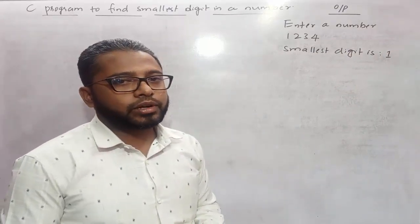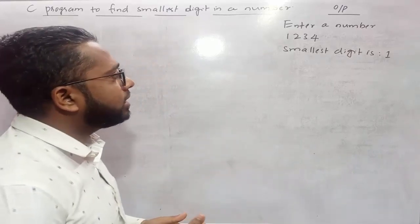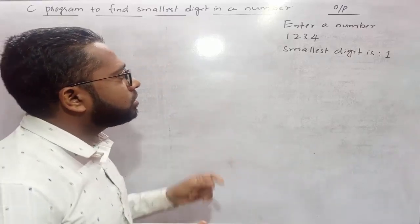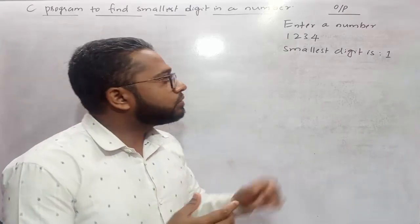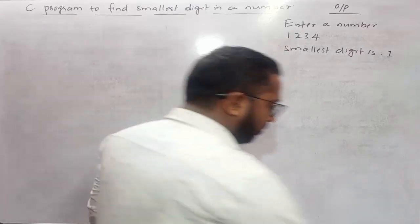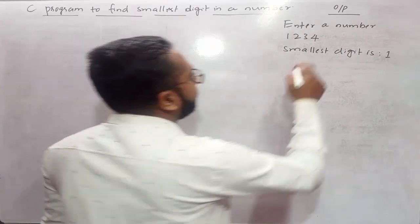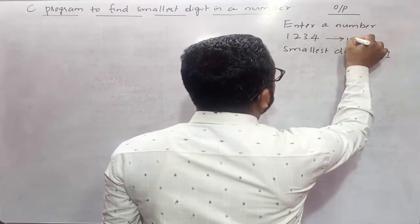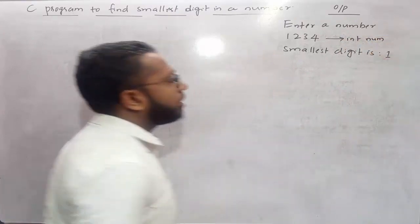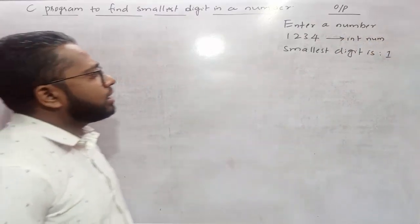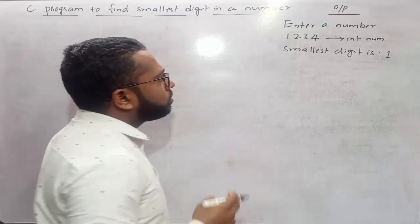To write this program, first we need to find out how many variables are required. Since we are asking the user to enter a number, there has to be a variable in our program which will store this value. So we need to create an integer variable — let's call it `num`.